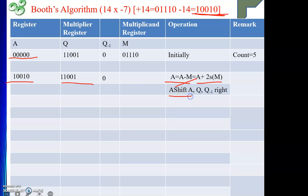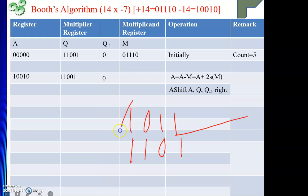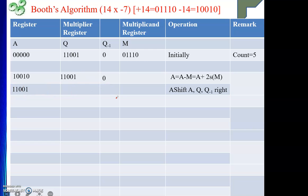Next we perform an arithmetic shift right on A, Q, and Q−1 together as a single unit. Remember: in arithmetic shift right, the sign bit is preserved. So A = 11001, Q becomes 10011, and Q−1 gets the shifted-out bit. One cycle is complete, so we decrement count to 4. Count is not 0, so we continue.